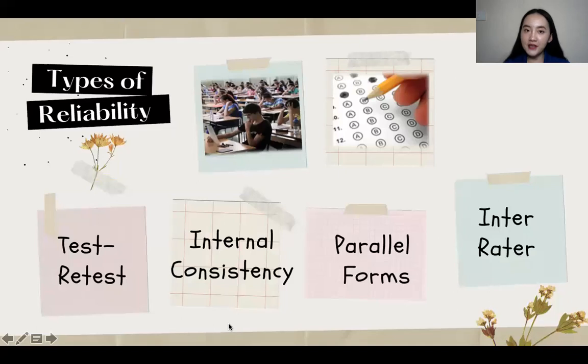So we have four types of reliability. We have the test and retest, internal consistency, parallel forms, and inter-rater.